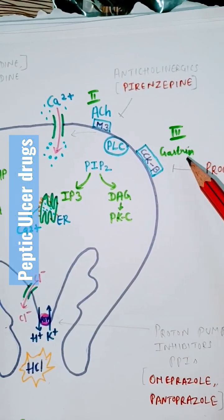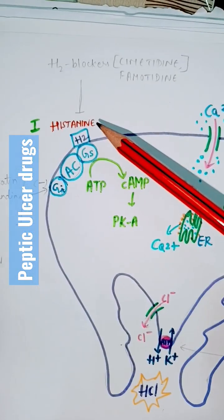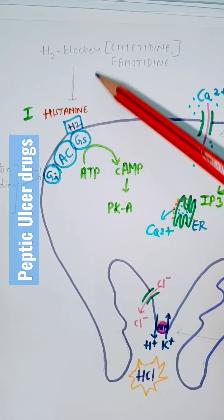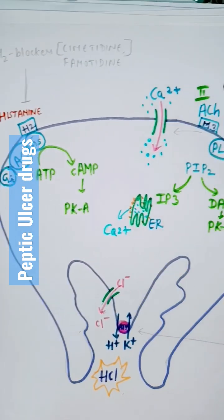Histamine, acetylcholine and gastrin stimulates the parietal cell. So histamine acts on H2 receptor. That's why H2 blockers like cimetidine and famotidine can be given.